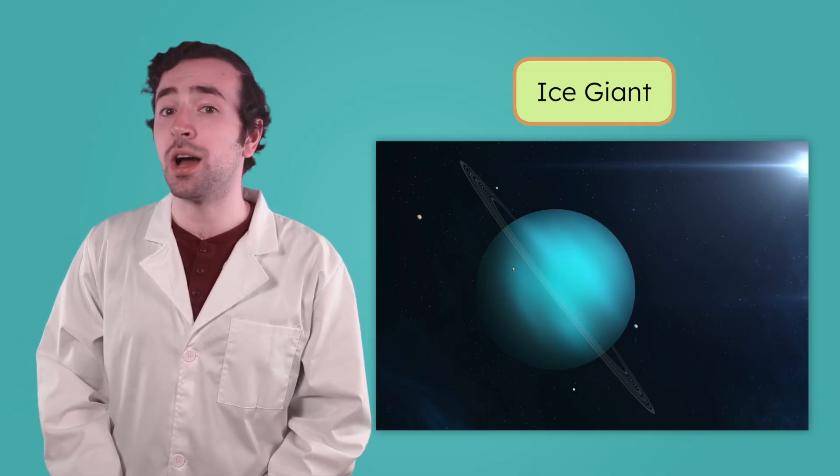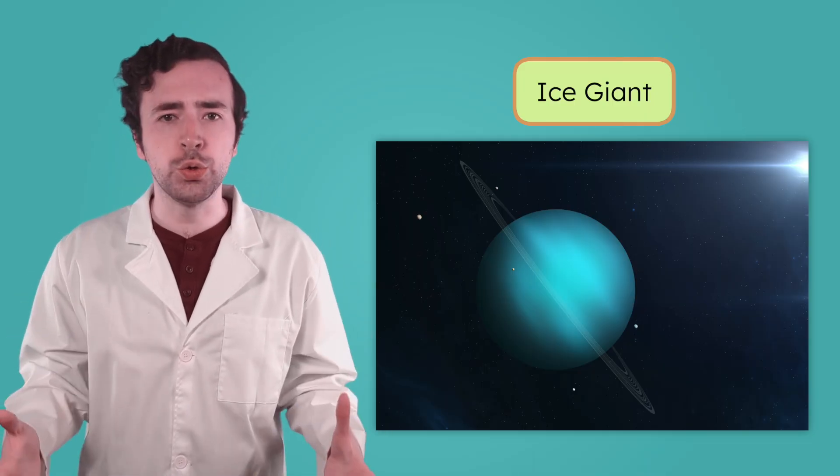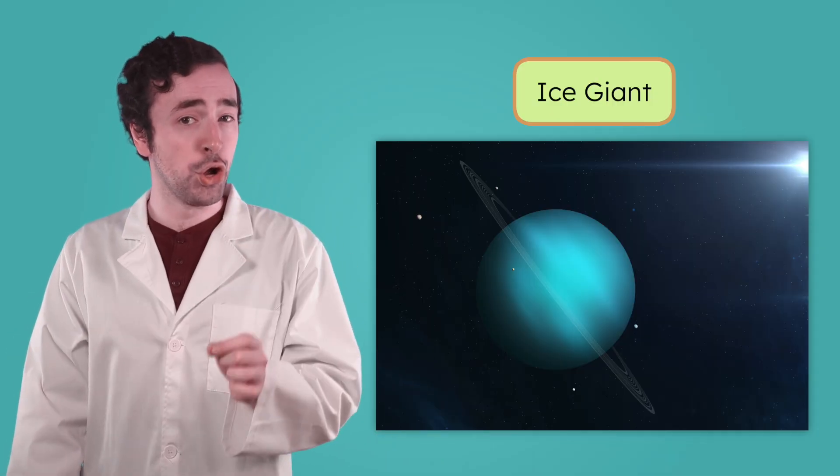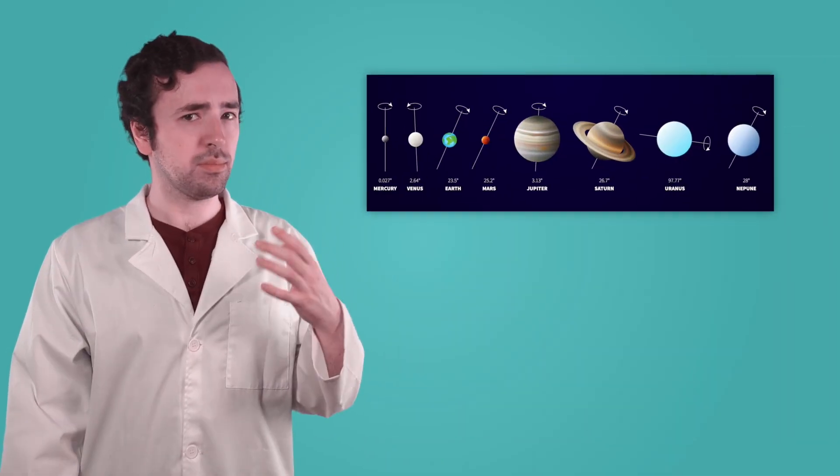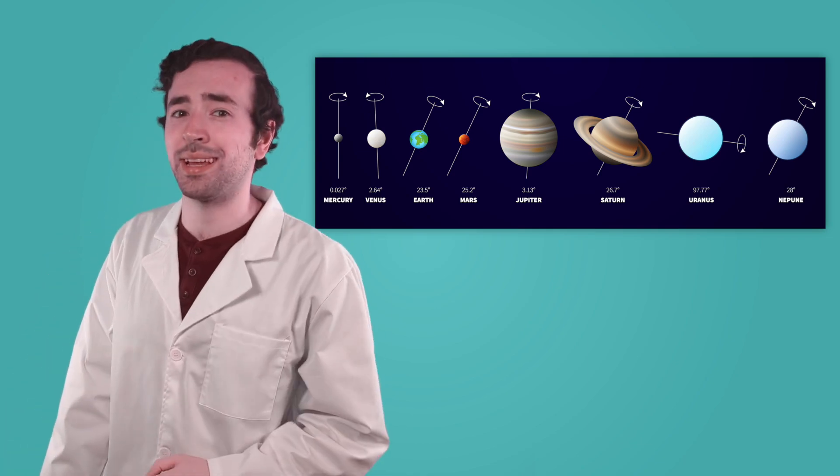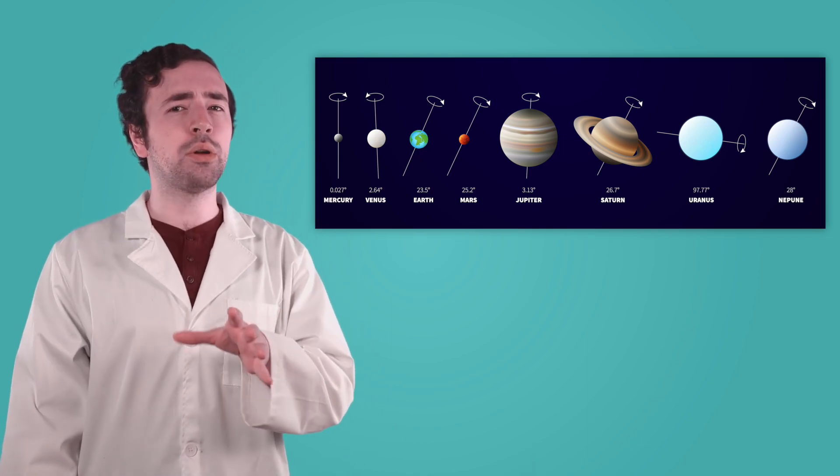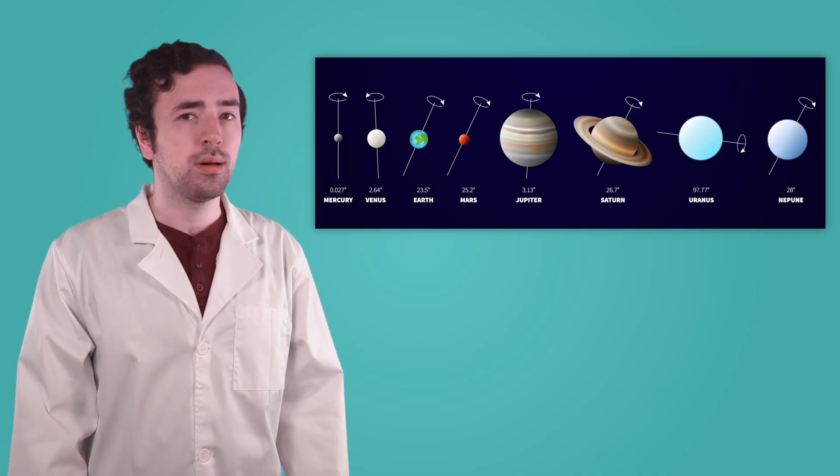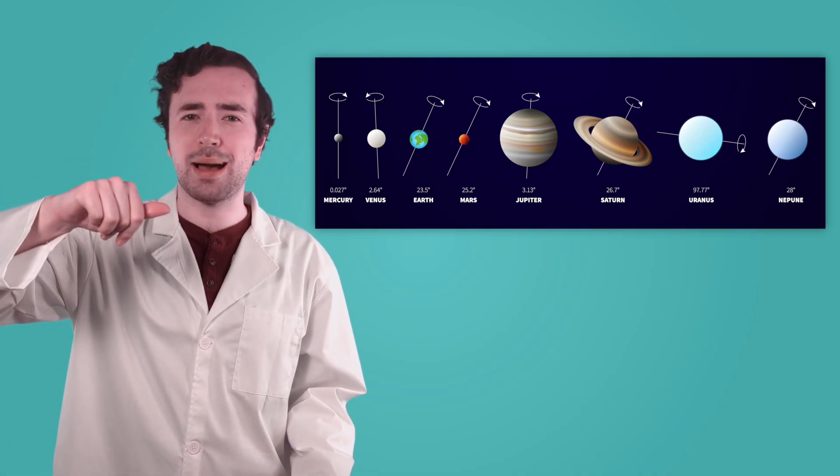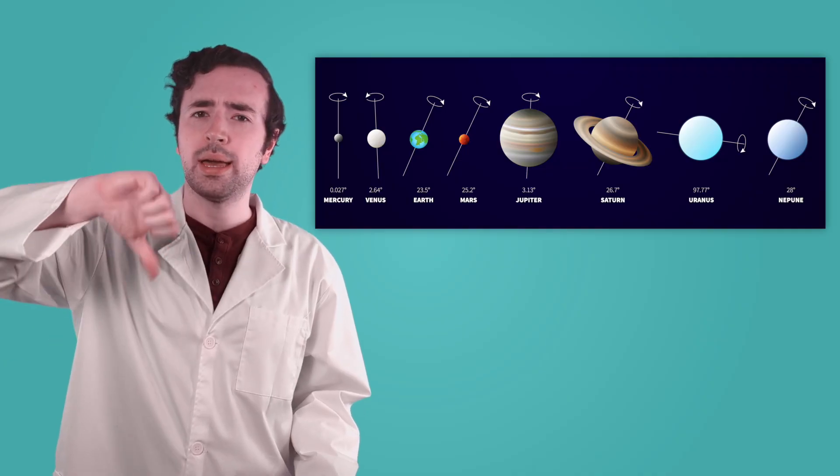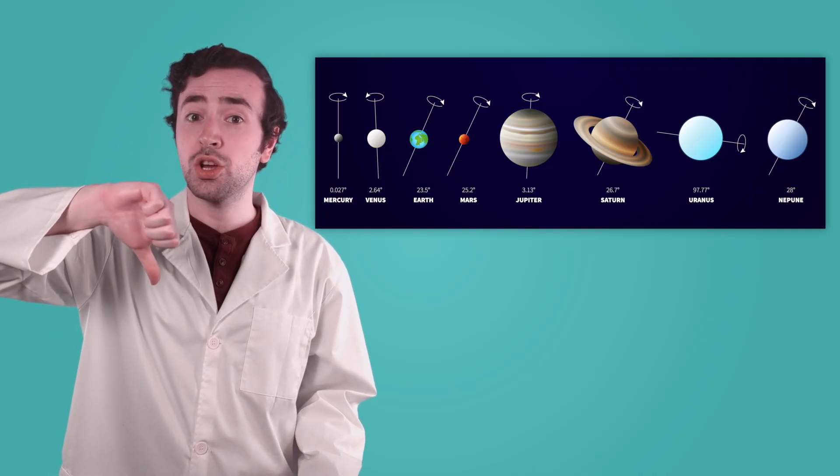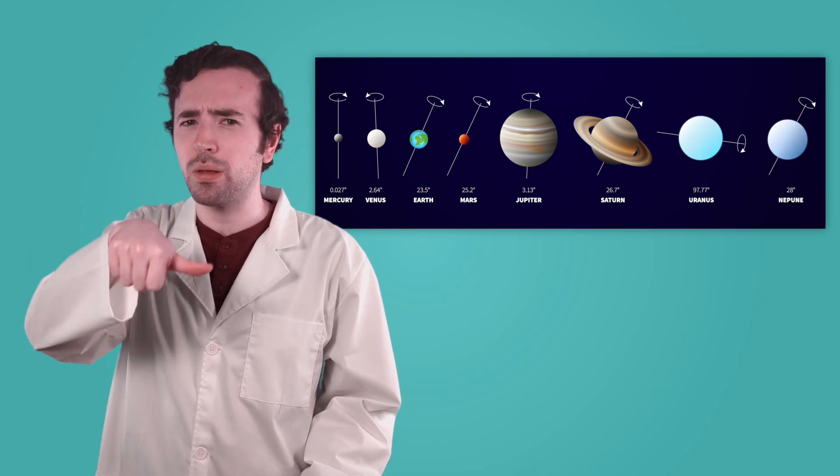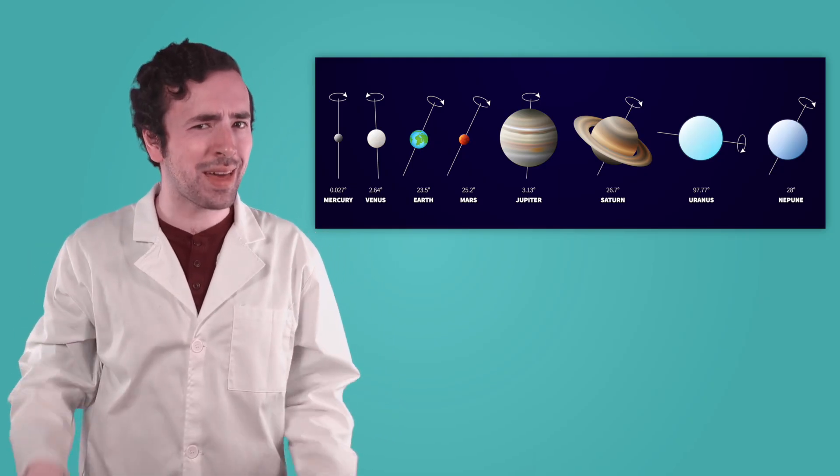Uranus shares a lot in common with the other outer planets. It's huge, has no solid surface, and is surrounded by 27 known moons. But there is one thing that makes Uranus really stand out. What do you notice about how the planets rotate? Most planets spin like tops with their axes pointing up and down. But Uranus rotates on its side, almost like a rolling ball. What do you think could cause a planet to tilt like that?